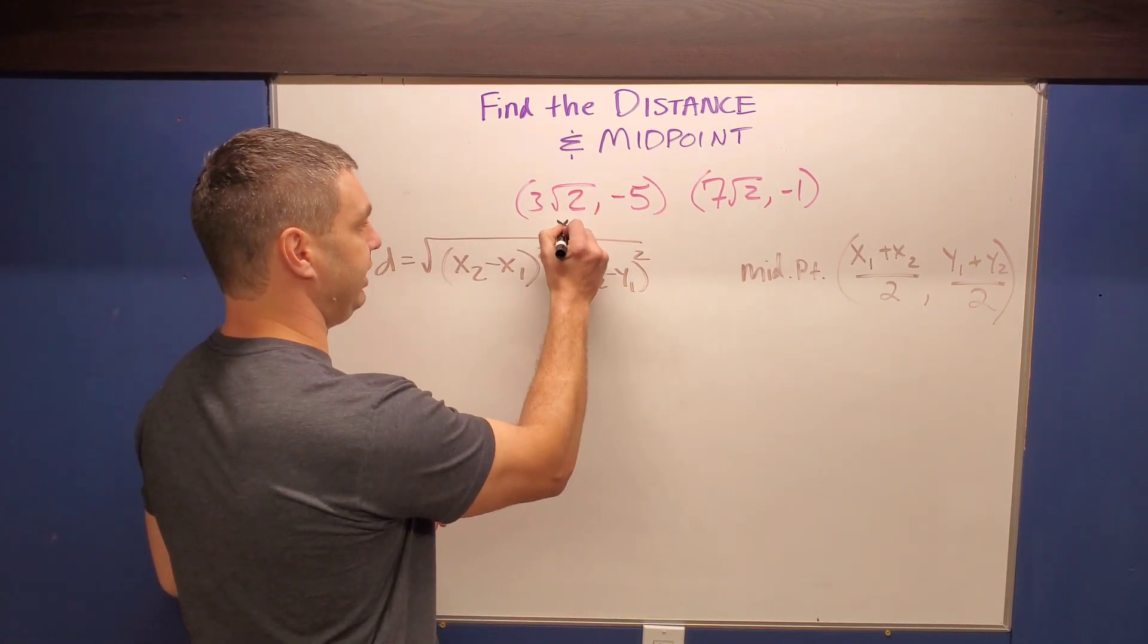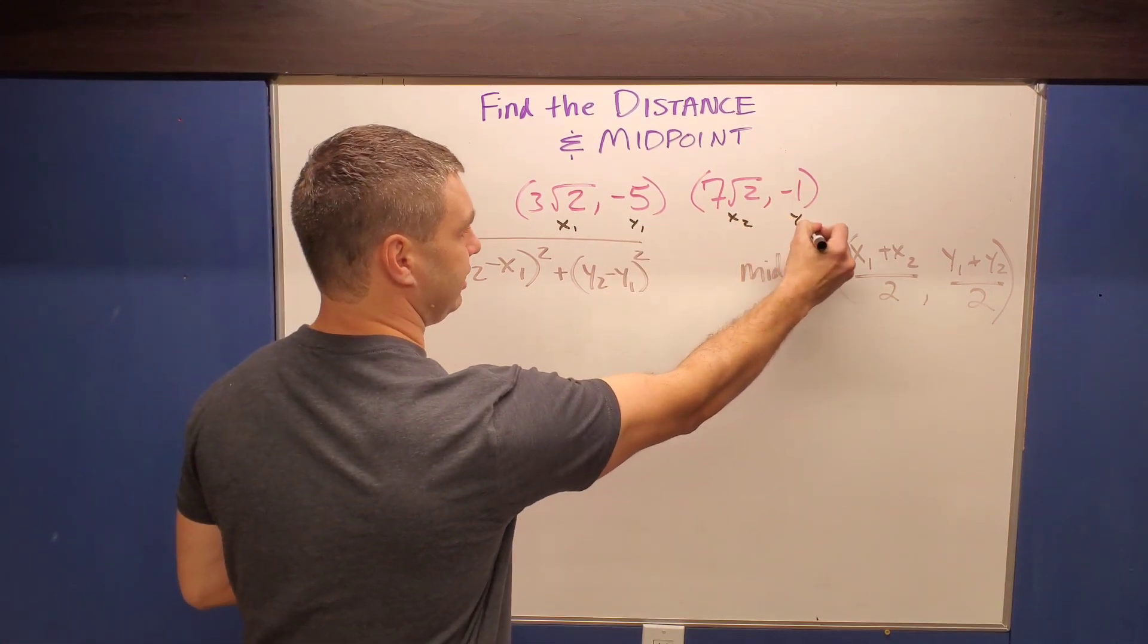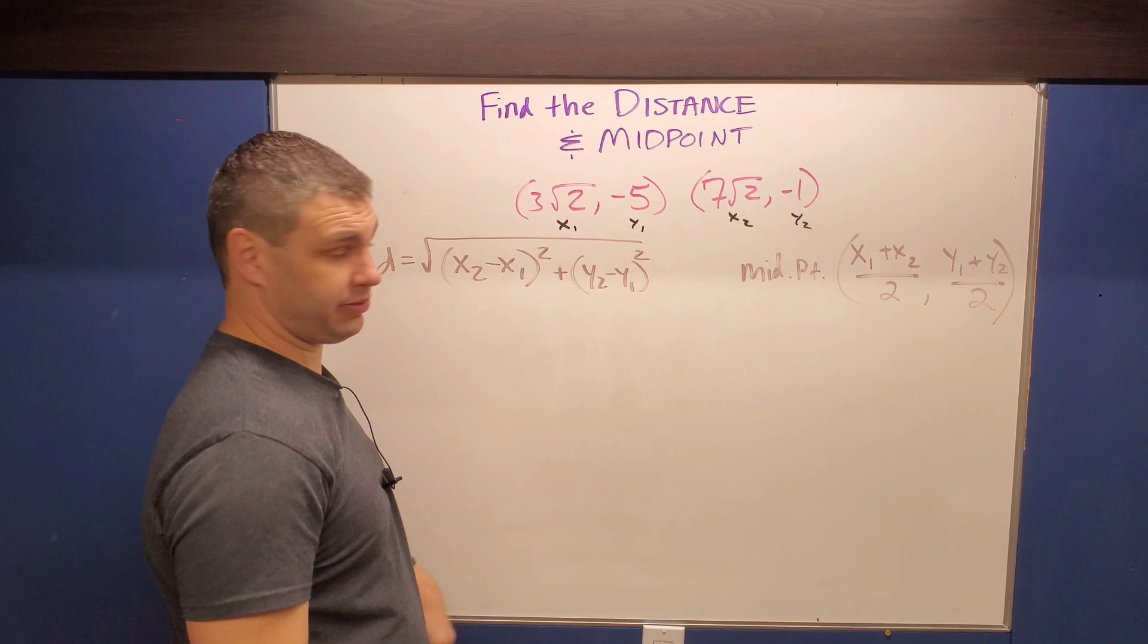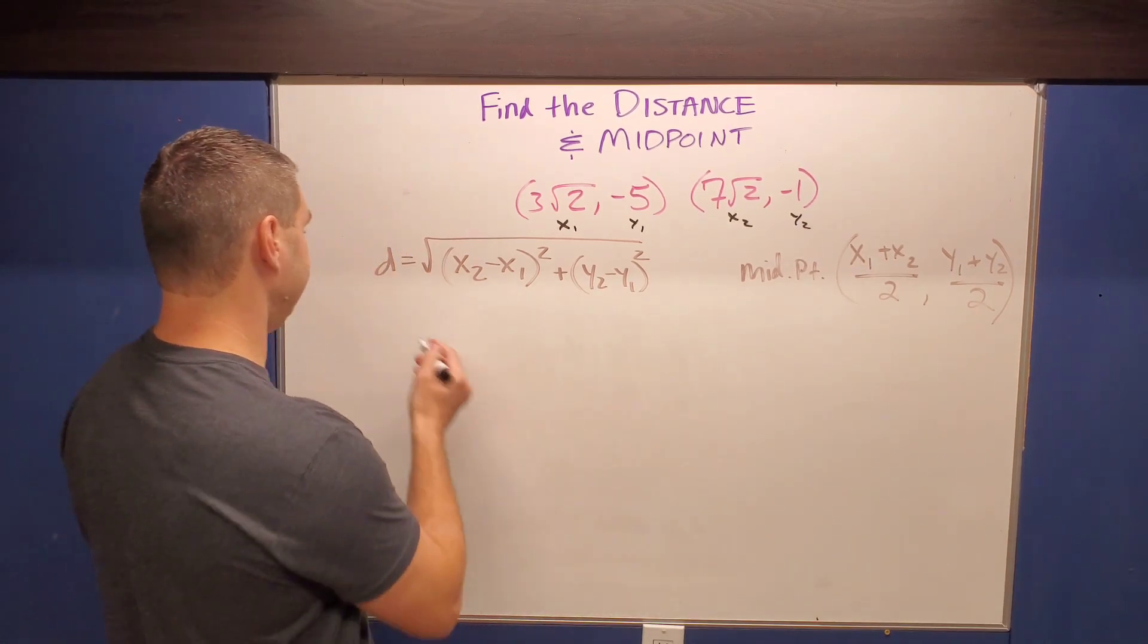So if I were to label these as my x1, y1, and my x2, y2, I can throw those different points into my formula and we can figure out what the distance actually is.